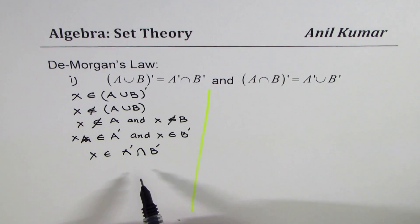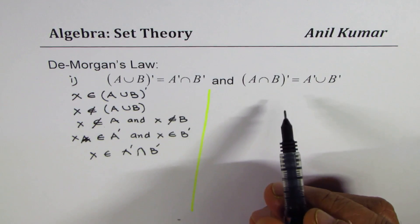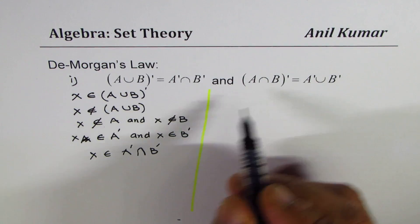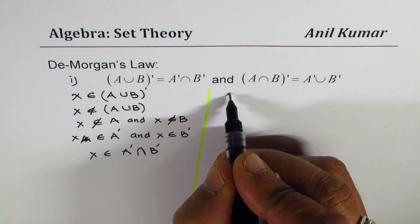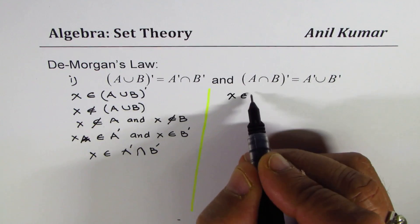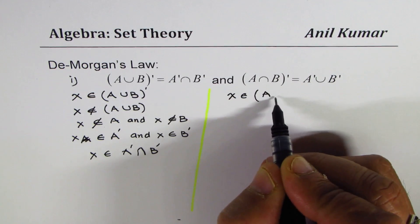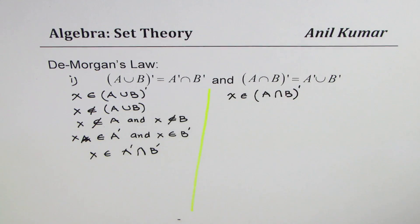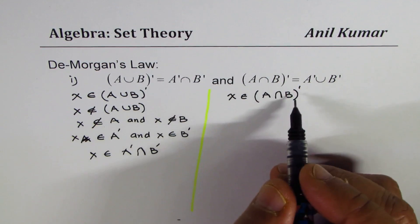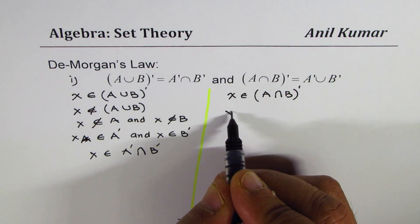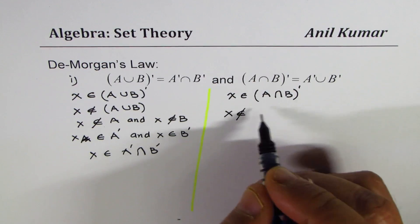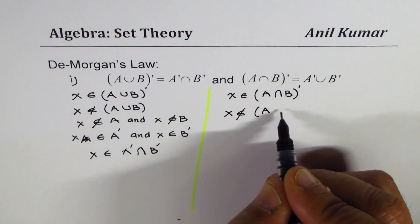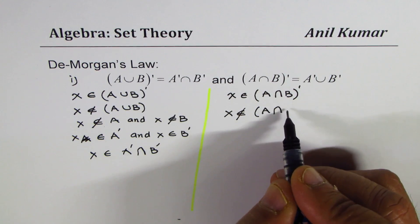Now similar guidelines can be used to prove the second part. So let us begin by saying that x belongs to A intersection B complement. So that means that x does not belong to intersection of A and B.